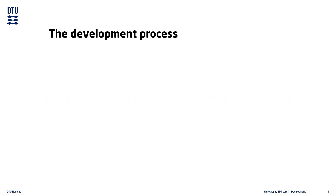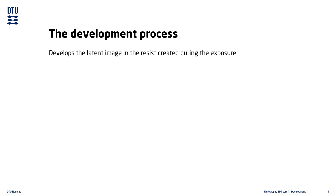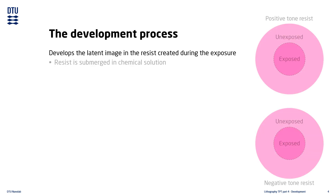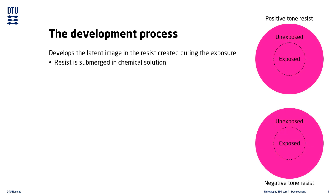After the exposure step, the resist now has a latent image of the mask pattern. The procedure for bringing out this latent image is called development. It is done by submerging the resist in a chemical solution which etches the resist. Some parts of the resist are removed quickly, while other parts are removed very slowly. This is how the latent image is made to appear.